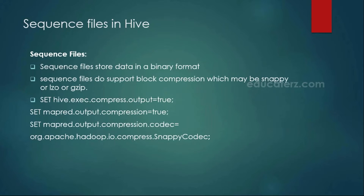If you see these different file formats, you have sequence file. The purpose of the sequence file is to store data in a binary format. That means any images or any binary data — if you want to work with that, you can use the sequence file format. It is very fast because it supports compression techniques as well. You can use any compression — LZO, GZip, Snappy codec, or any other codec you want.